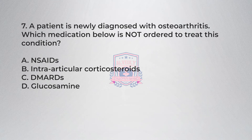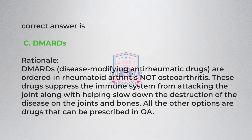Question seven: A patient is newly diagnosed with osteoarthritis. Which medication below is not ordered to treat this condition? A) NSAIDs, B) intra-articular corticosteroids, C) DMARDs, D) glucosamine. Correct answer is C: DMARDs. Rationale: DMARDs (disease-modifying anti-rheumatic drugs) are ordered in rheumatoid arthritis, not osteoarthritis. These drugs suppress the immune system from attacking the joint and help slow down the destruction of the disease. All other options are drugs that can be prescribed in OA.